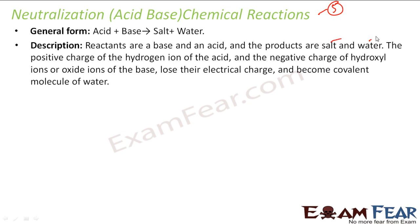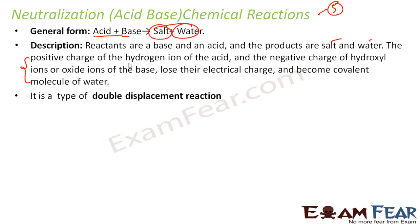The reactants are an acid and a base, and the products are salt and water. The positive hydrogen ions and negative hydroxyl ions lose their electrical charge and form covalent molecular water — you'll understand this better when you study covalent bonds. Generally, an acid-base reaction is a double displacement reaction, and it is also called a neutralization reaction because the acid and base neutralize each other.